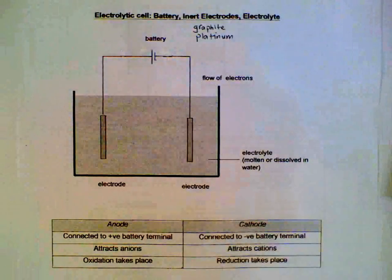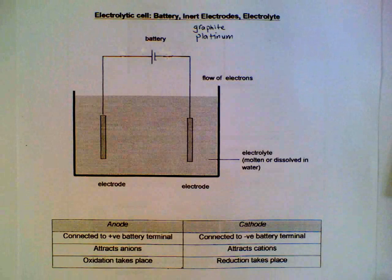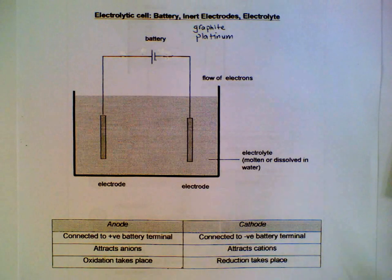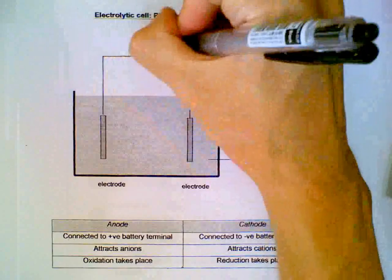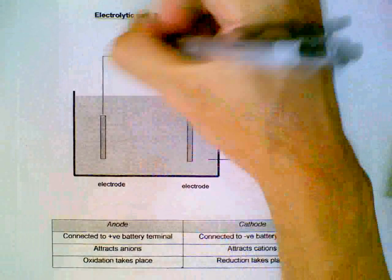First of all, we will need to start with the battery to figure out where the electrons come from. The shorter end will be the negative terminal. The longer end will be the positive terminal.